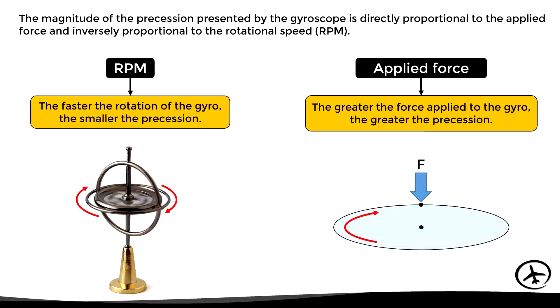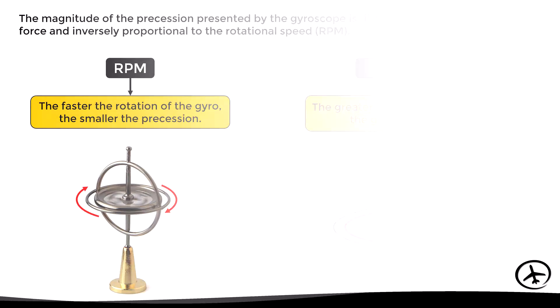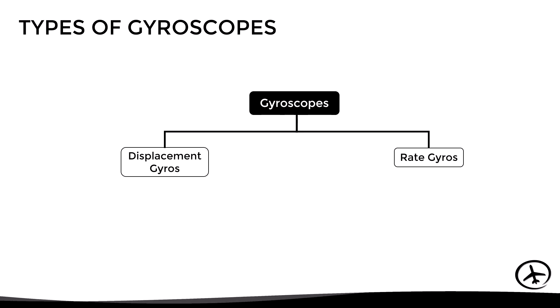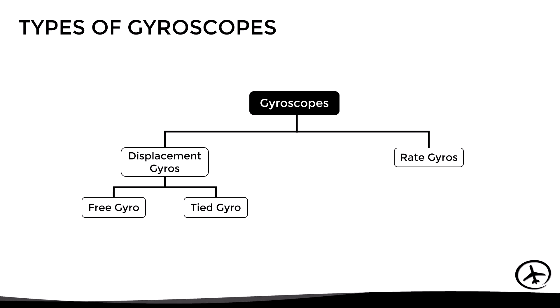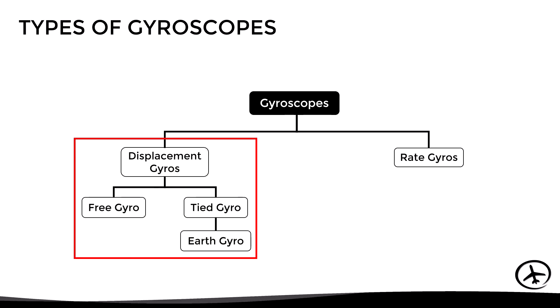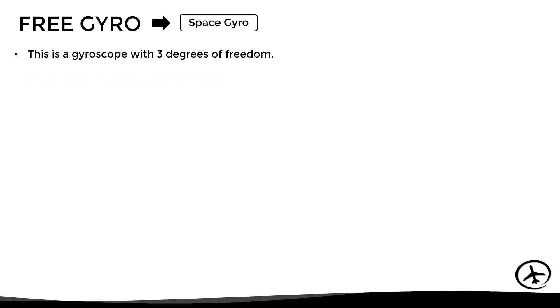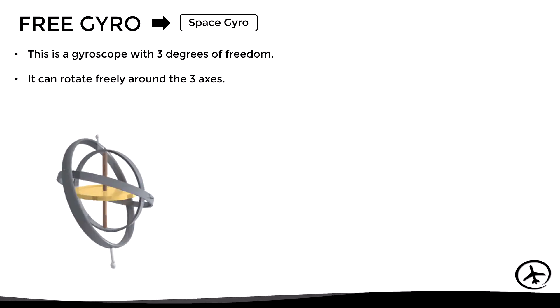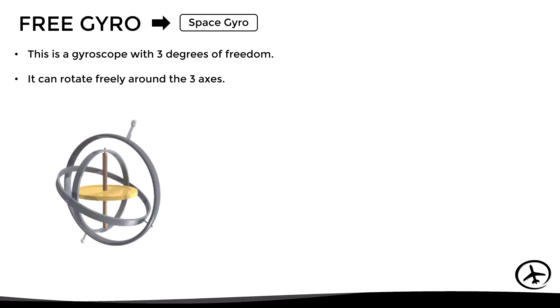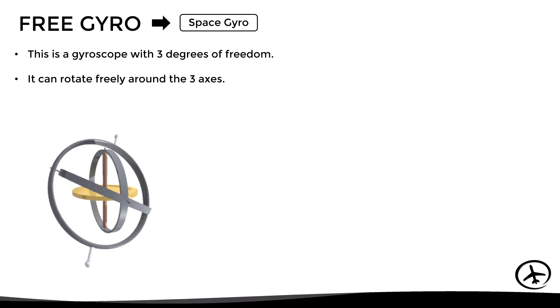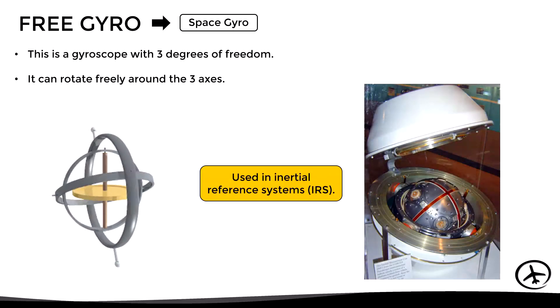Now let's see the different types of gyroscopes. Gyroscopes can be classified into displacement gyros and rate gyros. Displacement gyros can be divided into free gyros and tied gyros, among which we can highlight the earth gyros. Starting with the free gyro, also known as the space gyro: this is a gyroscope with three degrees of freedom, meaning it can rotate freely around the three axes. Although it is widely used to explain gyroscopic effects, in practical aviation applications it is only used in older inertial reference systems.